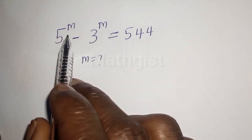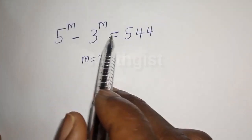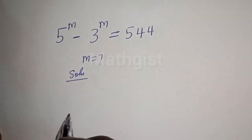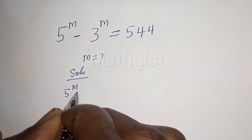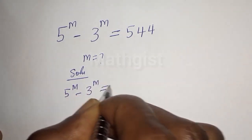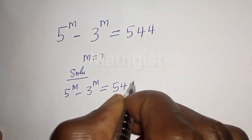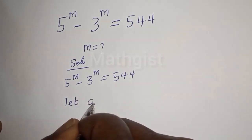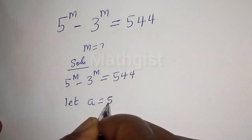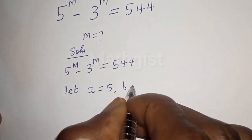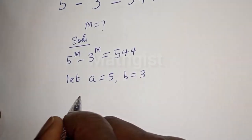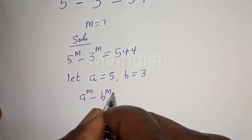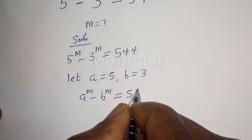How to solve for m from this Olympiad problem: 5 raised to power m minus 3 raised to power m is equal to 544. Let a equal 5 and b equal 3. Therefore, a raised to power m minus b raised to power m will be equal to 544.